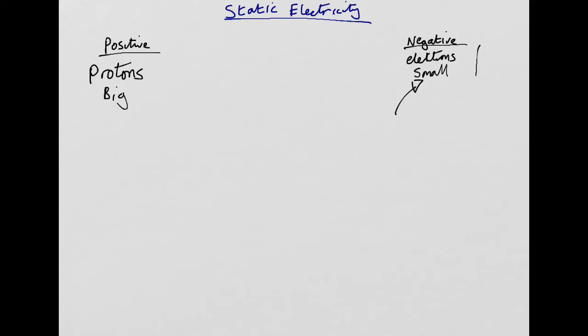Let's talk about this in terms of static electricity. Electricity normally is electrons moving about a circuit. Static electricity is when you've got electrons not moving. What type of material do electrons not move in? Well, that's an insulator.